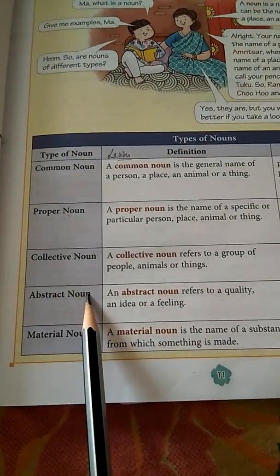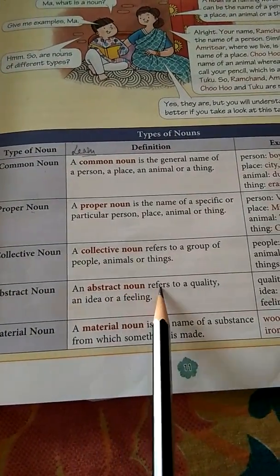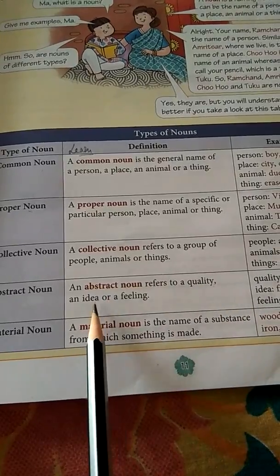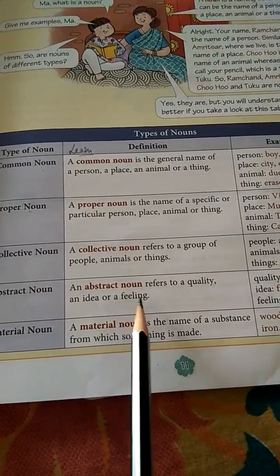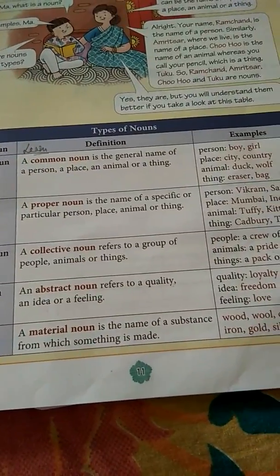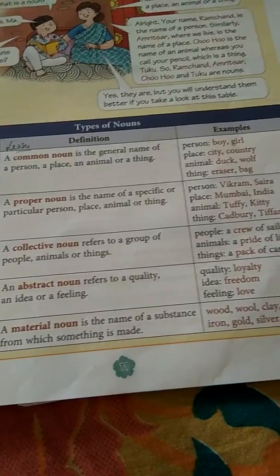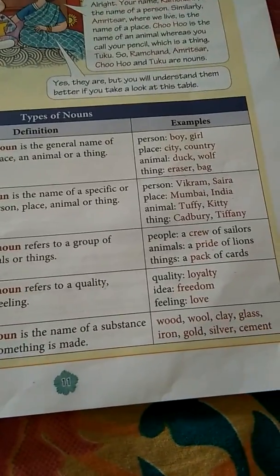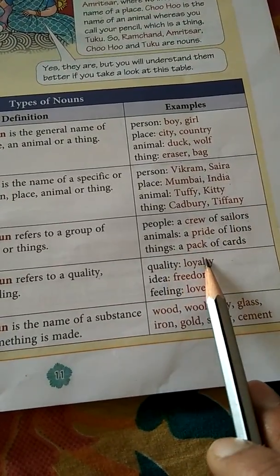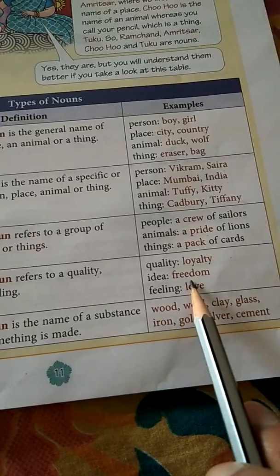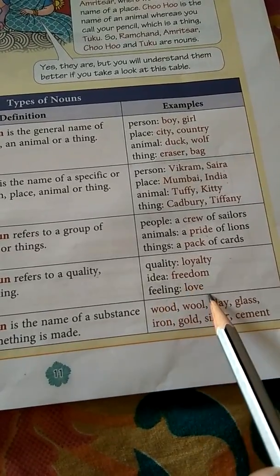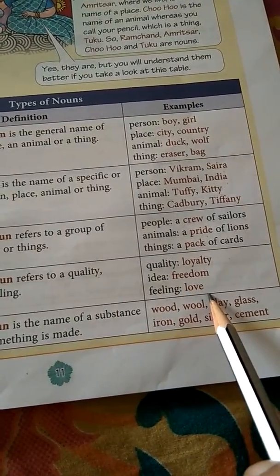Abstract noun: an abstract noun refers to a quality, an idea, or a feeling. An abstract noun you cannot see, but you can only feel. Quality — loyalty. Idea — freedom. Feeling — love.